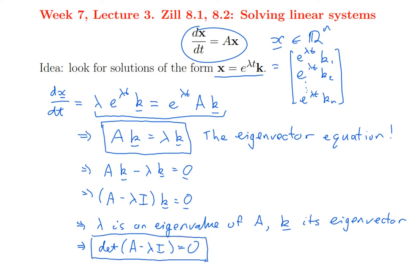Which means I've eliminated the vector k, and now I need to evaluate the determinant of A minus lambda I and solve for it equal to zero. This is called the eigenvalue equation.